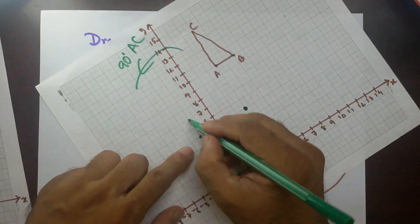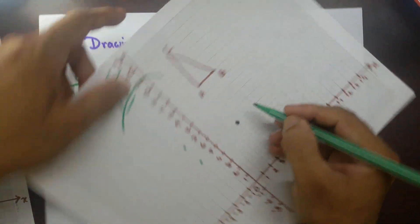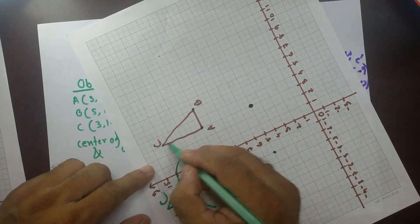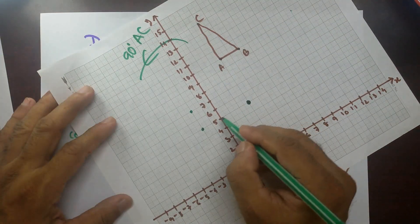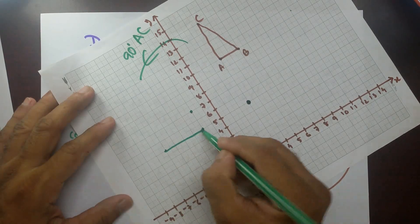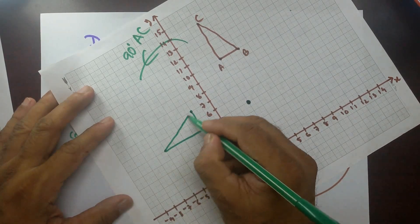For C, going straight, 1, 2, 3, 4, 5, 6, 7, 8, 9. So 9 units to the left. So 1, 2, 3, 4, 5, 6, 7, 8, 9. So that would be the image.